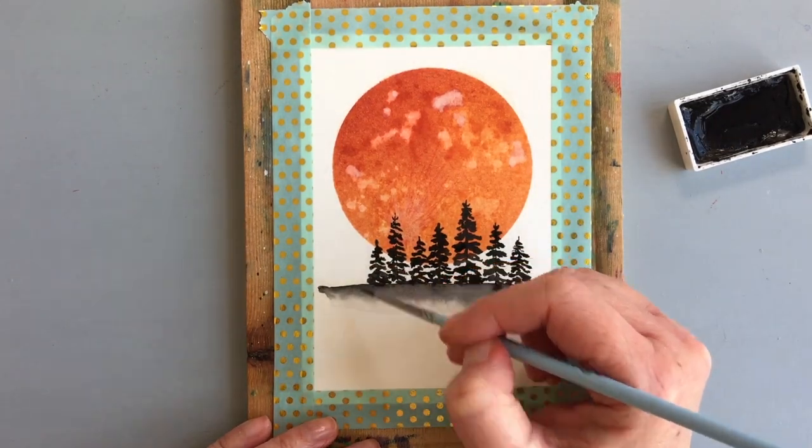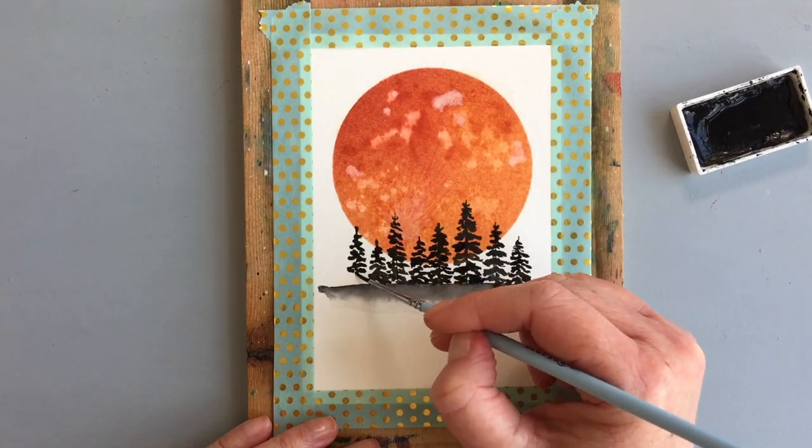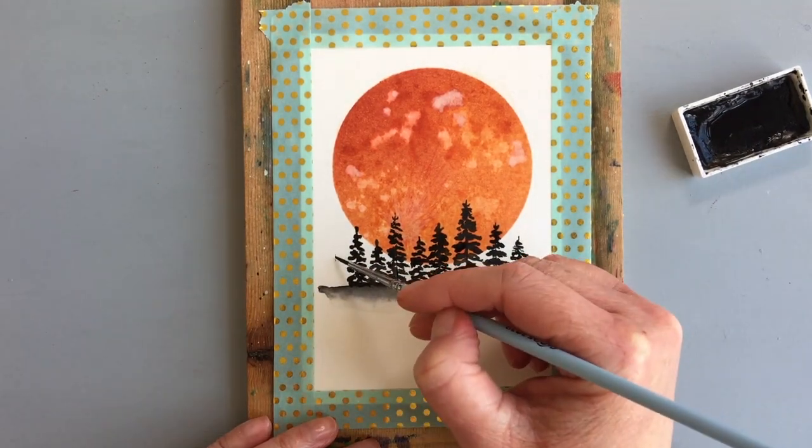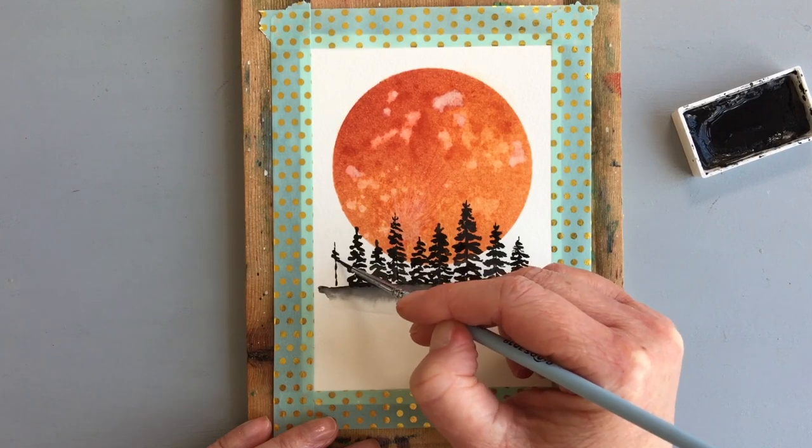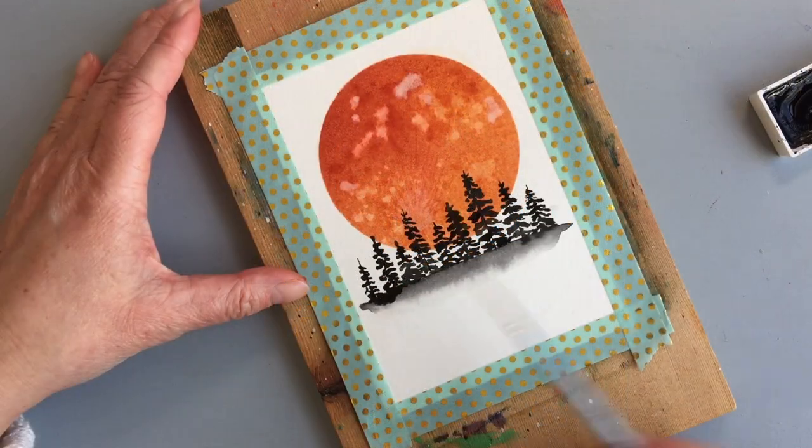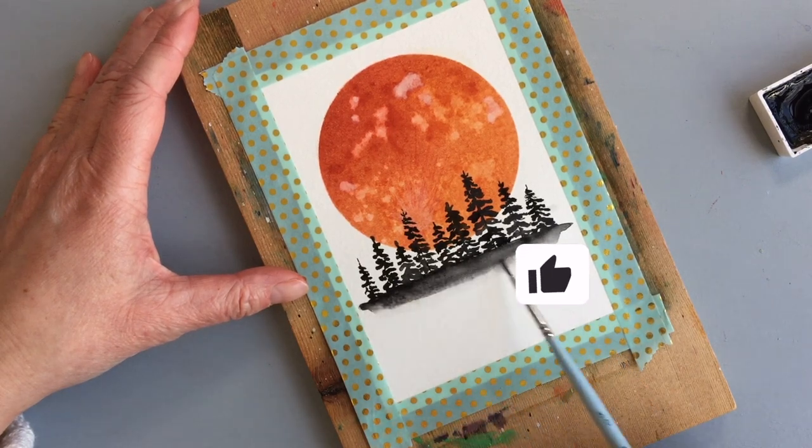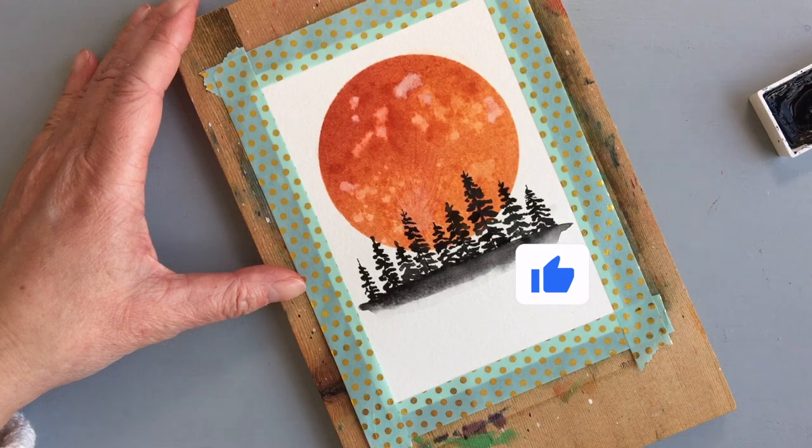I think it looks great and it's way easier than painting the moon with watercolors, at least in my experience. So I finished up painting the trees and then added a little bit more black across the ground just to make it darker.